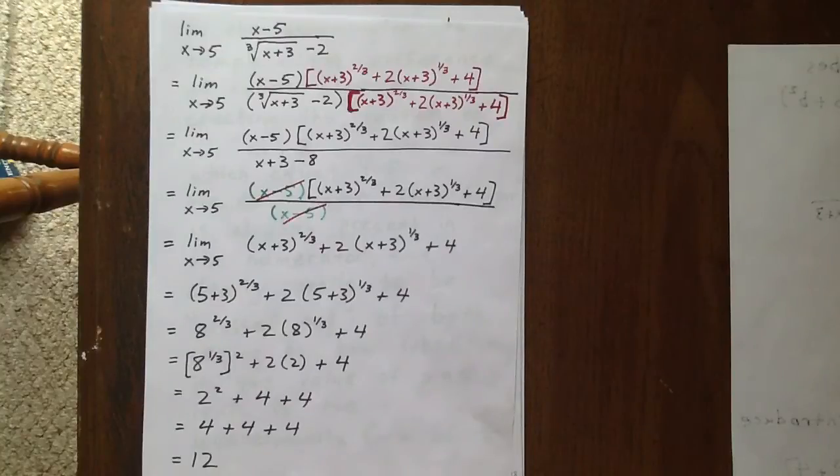In this particular question, we want to find the limit as x goes to 5 of the expression shown. So our first order of business is to substitute in an x value of 5. Unfortunately we get the indeterminate form of 0 over 0.